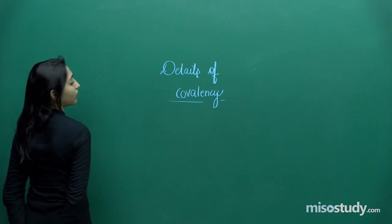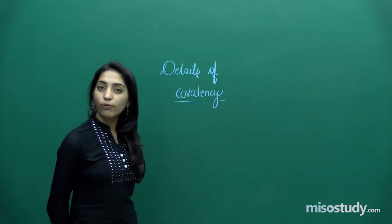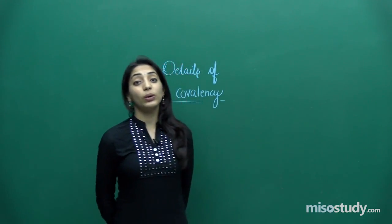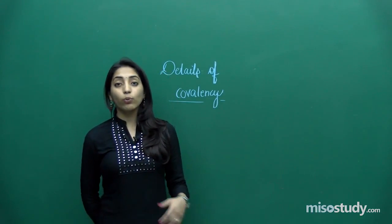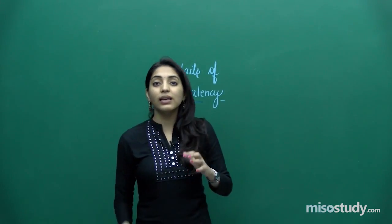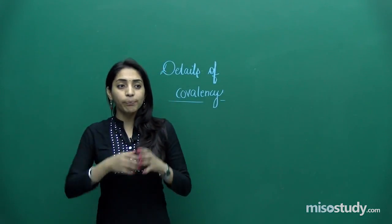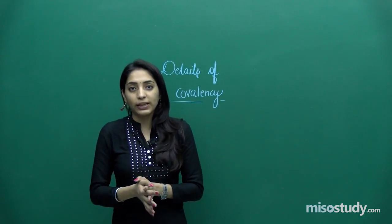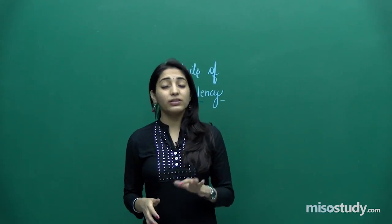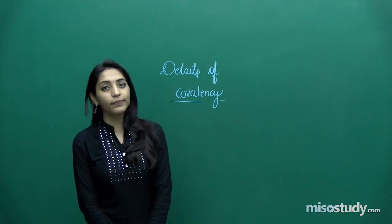In today's class, as you can see on the board, we have to cover something related to the details of covalency. We'll be able to cover covalency only if you understand what were the drawbacks of Lewis dot structures and what were some different examples of Lewis dot structures which were not very common — ones that did not satisfy the Lewis rule very simply. So we will first look at those exceptions and then finally come to the concept of covalency.